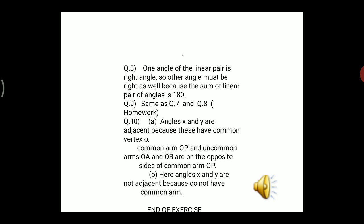Question 9: if one angle of a linear pair is obtuse, what kind is the other? Since the sum of a linear pair is 180°, and adding two obtuse angles or an obtuse and a right angle gives more than 180°, the only possibility is that the other angle must be acute.